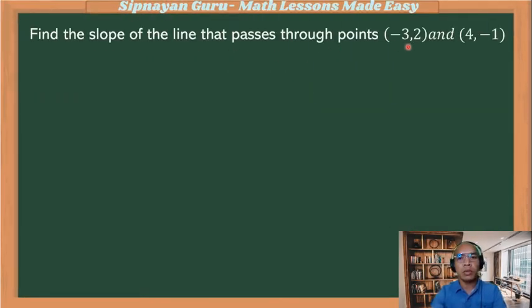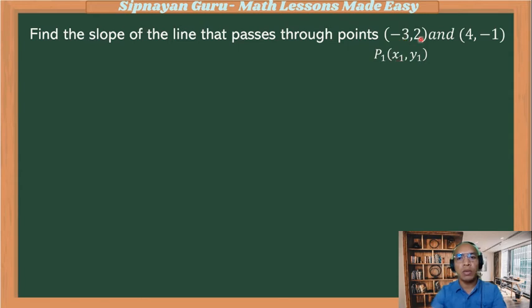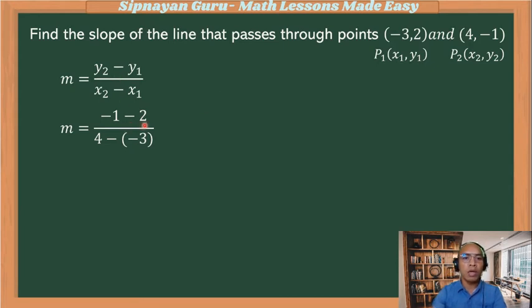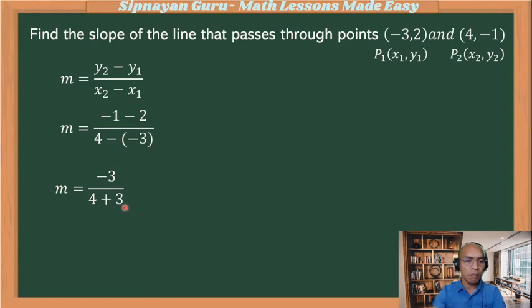Find the slope of the line that passes through (−3, 2) and (4, −1). Point one: x₁ = −3, y₁ = 2. Point two: x₂ = 4, y₂ = −1. Using the formula: (y₂ − y₁) over (x₂ − x₁) = (−1 − 2) over (4 − (−3)). Simplifying: −3 over (4 + 3) = −3 over 7. So the slope is negative 3 over 7.